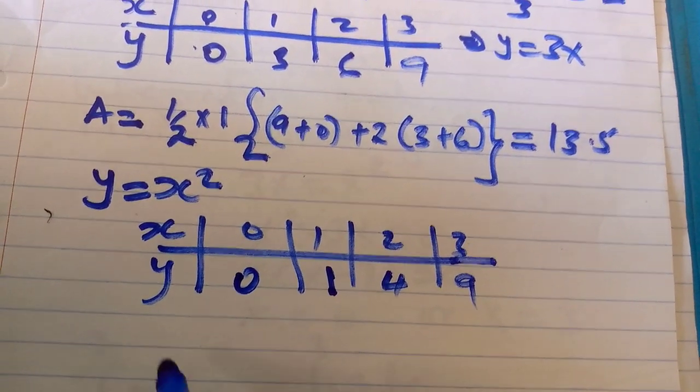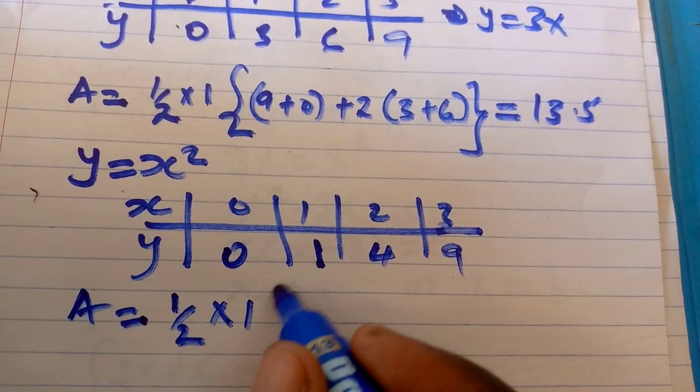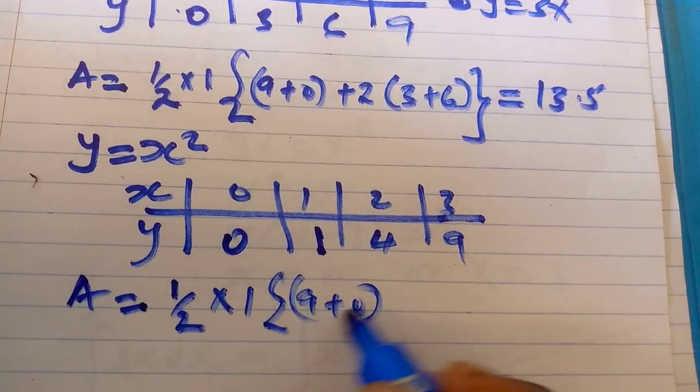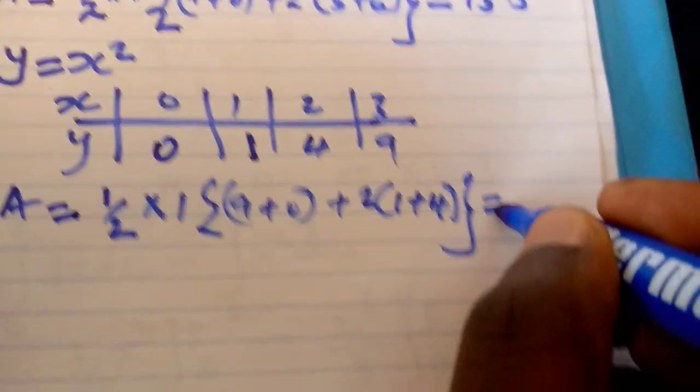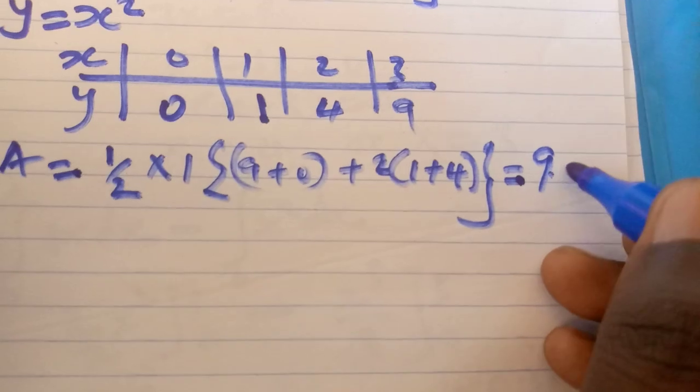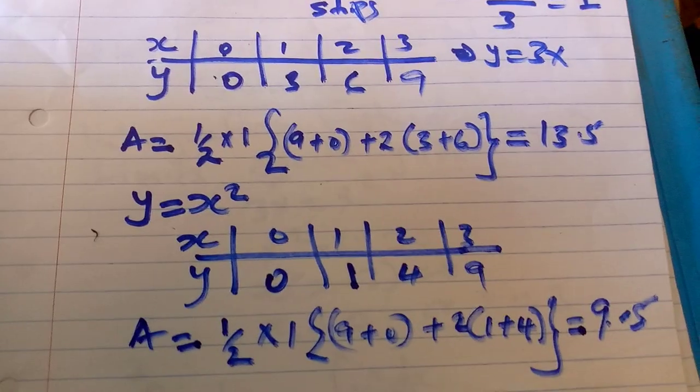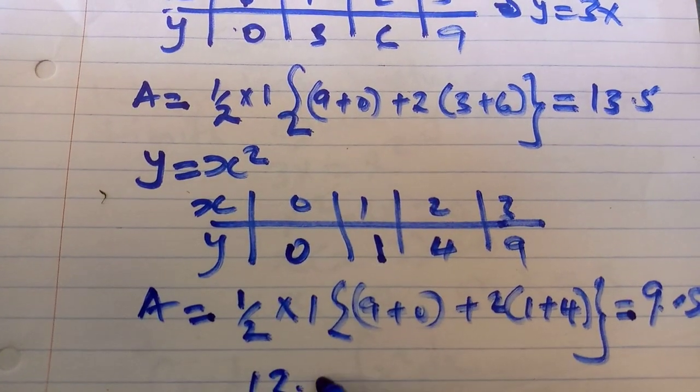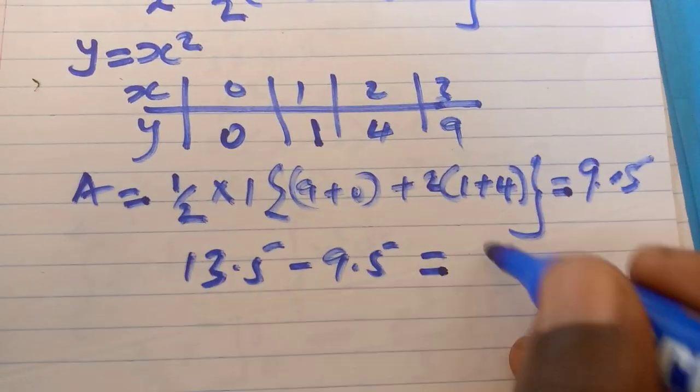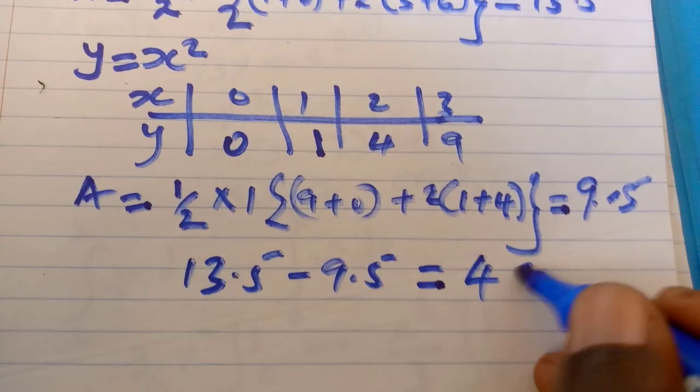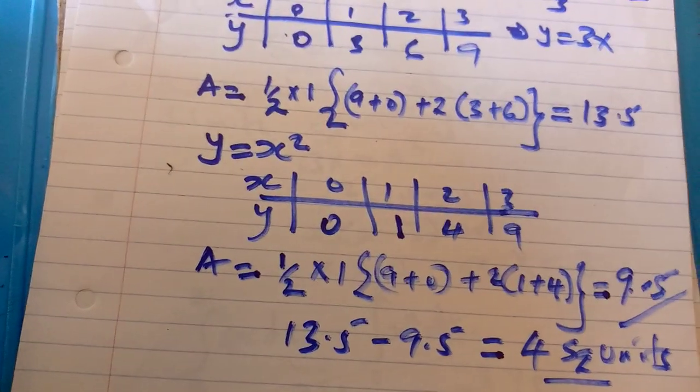So area becomes 1.5. Trapezoidal gives me area under curve: 15.5 minus 9.5 equals 4. So that is area using trapezoidal rule.